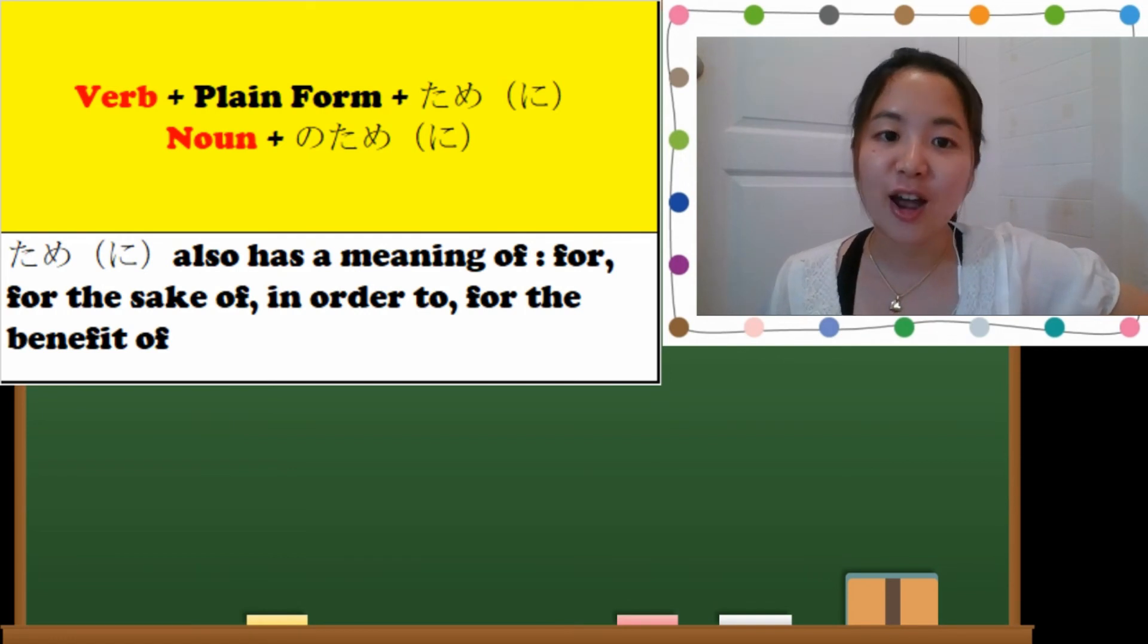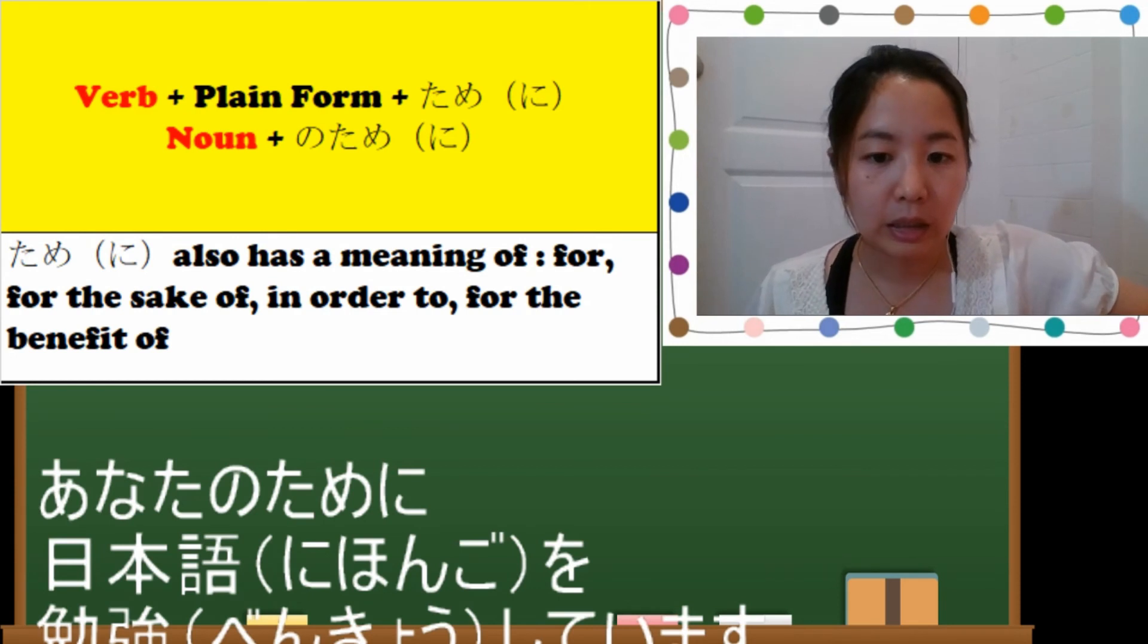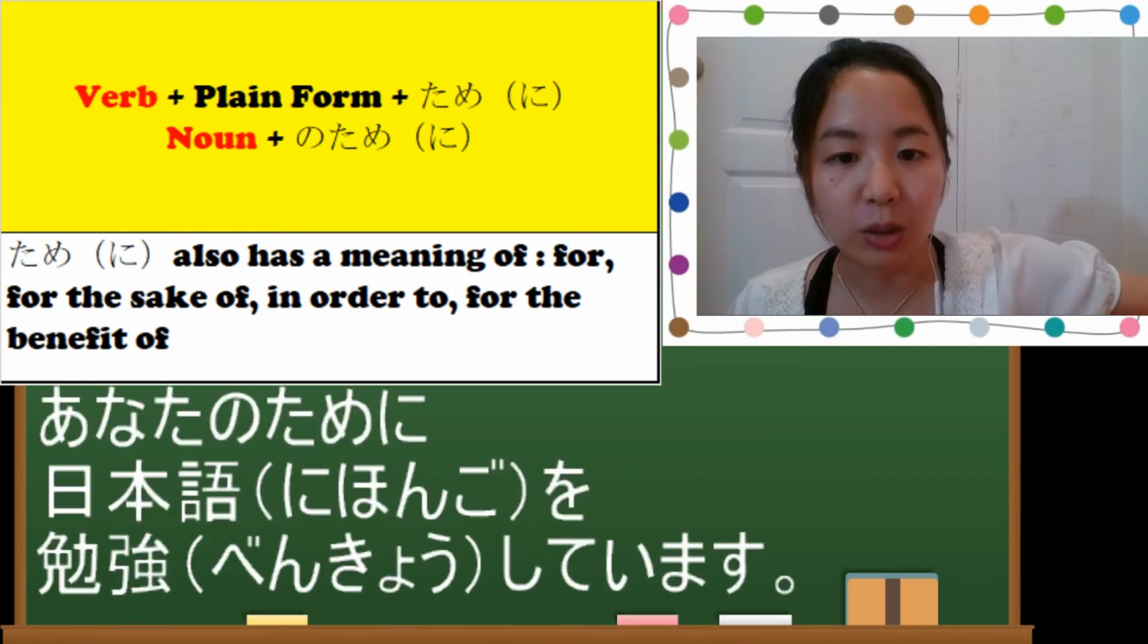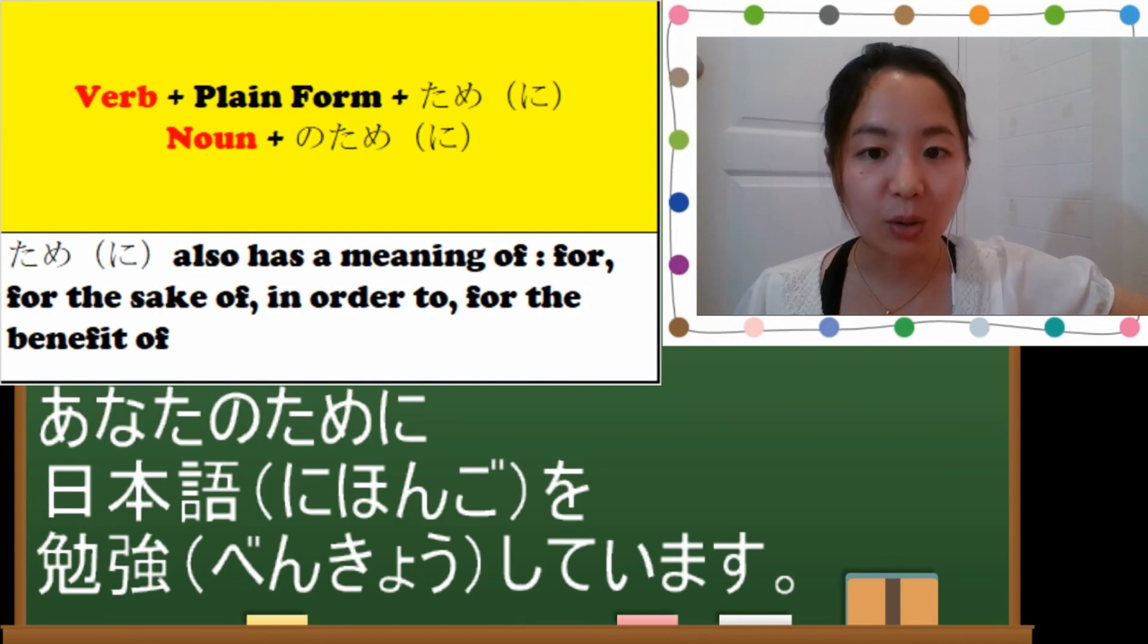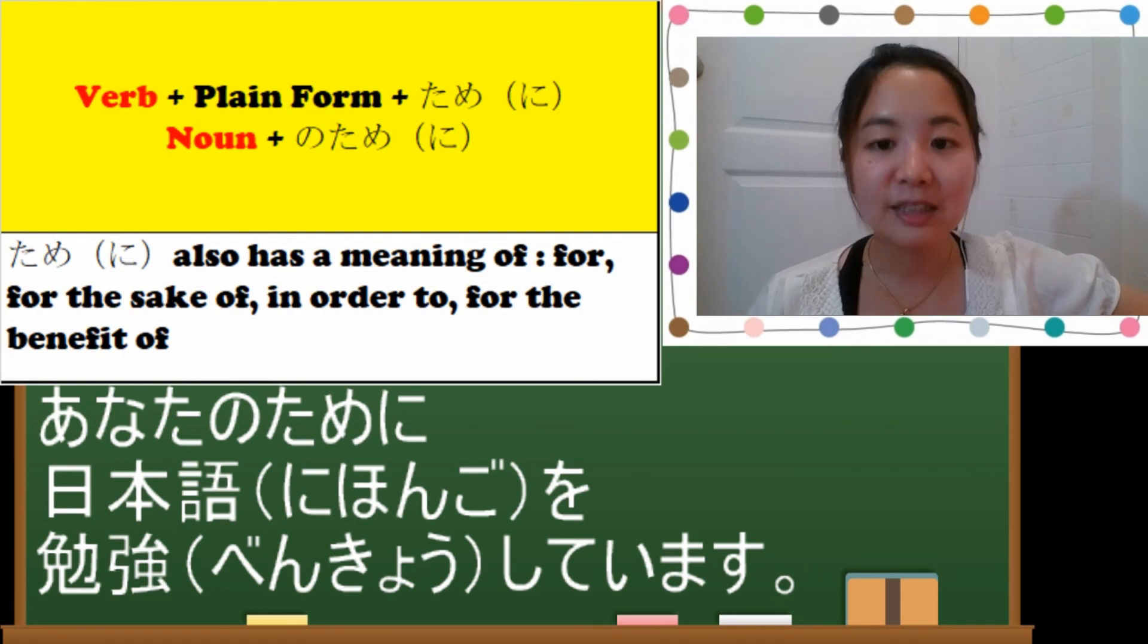In this case you say anata no... anata no tame-ni nihongo wo benkyou shite imasu. So after noun it's no tame-ni. For you, anata no tame-ni.